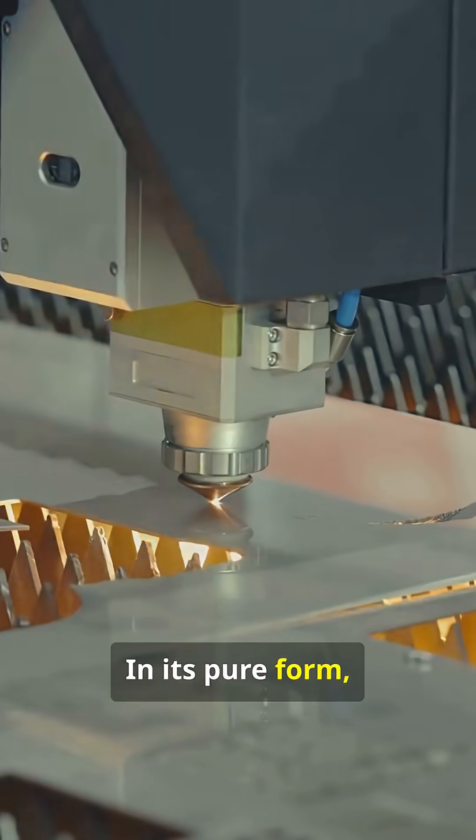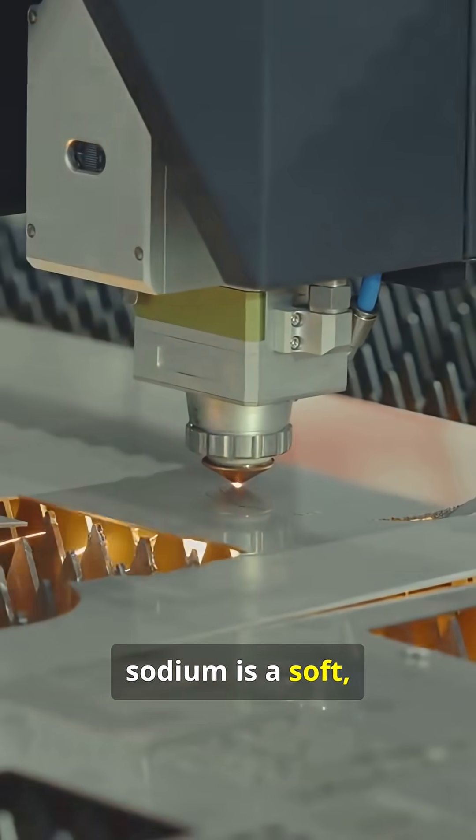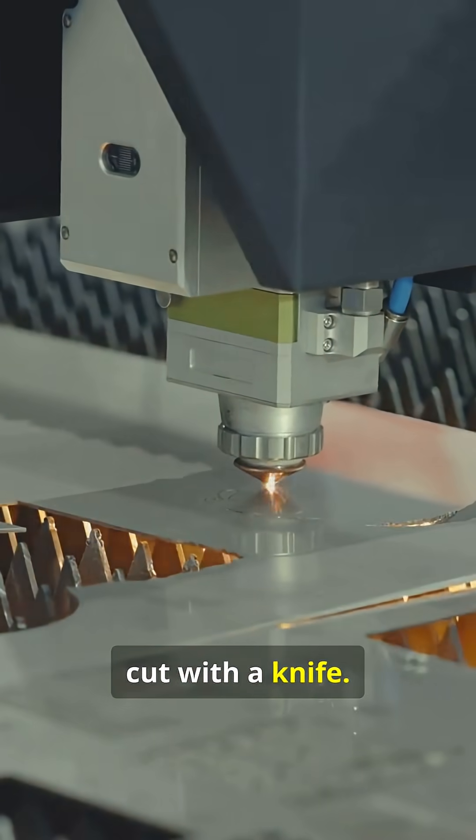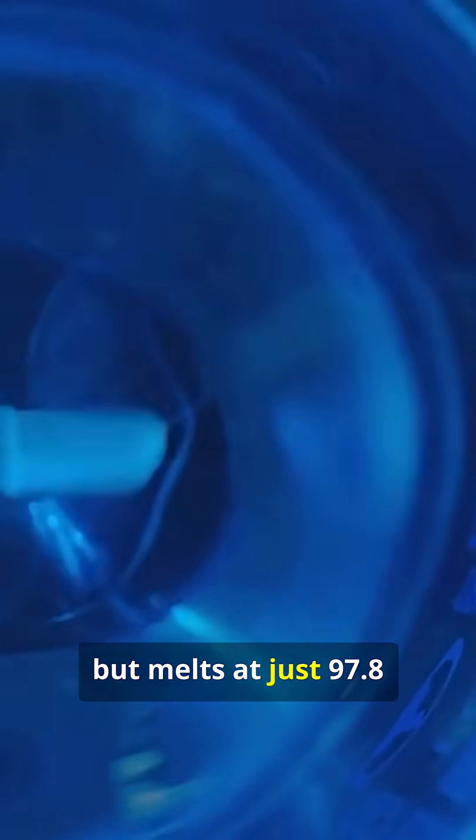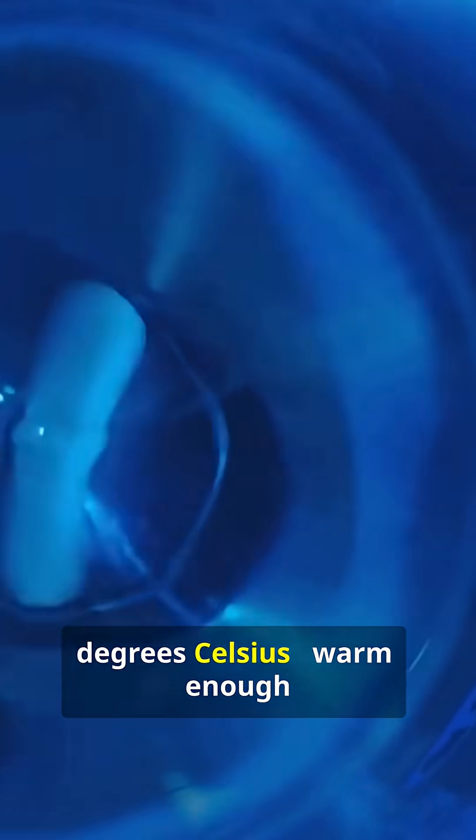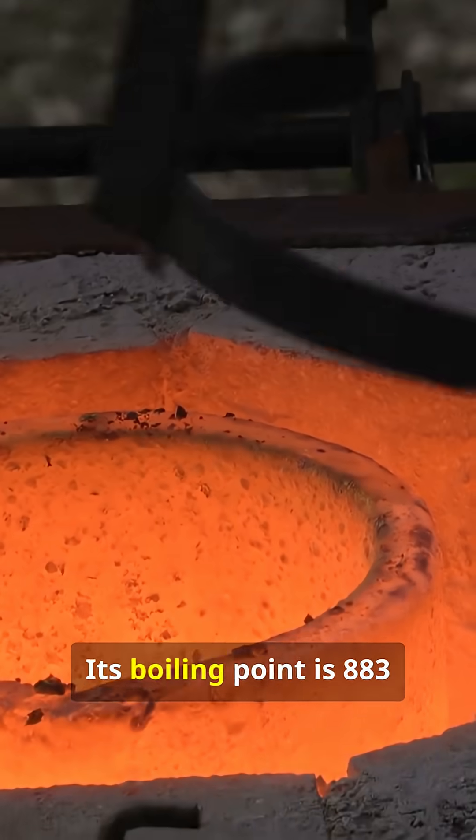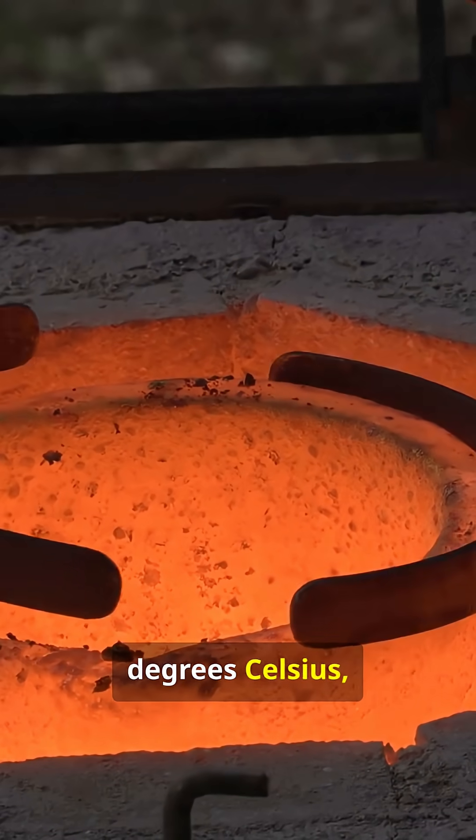In its pure form, sodium is a soft, silvery white metal you can cut with a knife. It's a solid at room temperature, but melts at just 97.8 degrees Celsius. Its boiling point is 883 degrees Celsius.